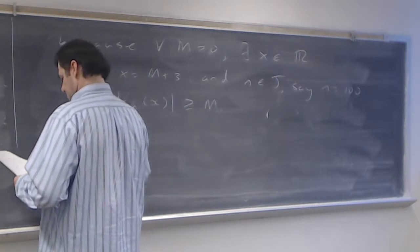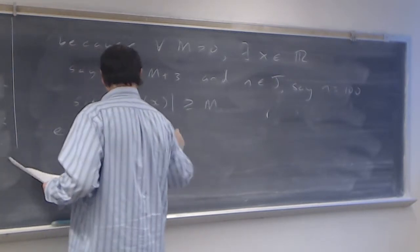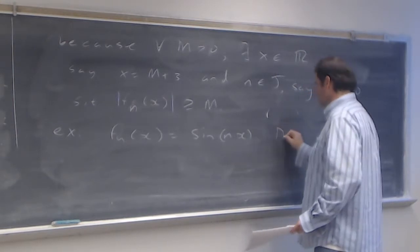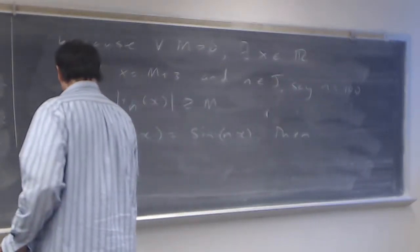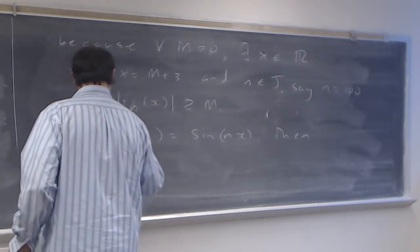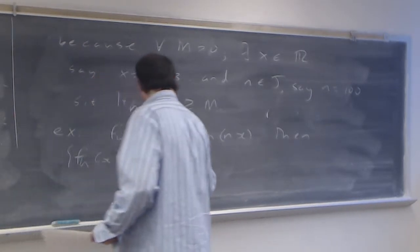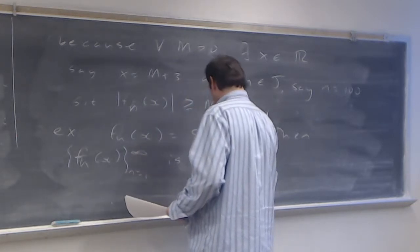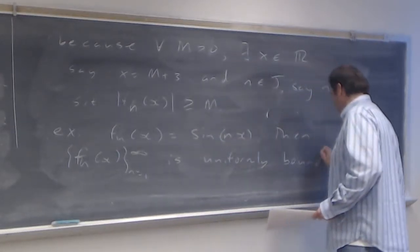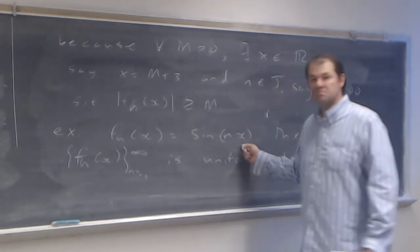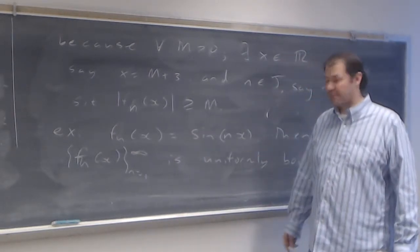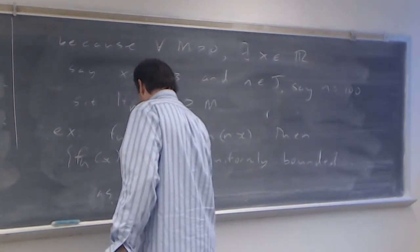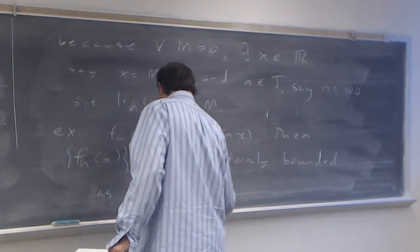Here's another example. If we let f sub n of x equal to sine of n times x, then the sequence of functions f sub n of x is uniformly bounded. That's easy to see, because sine of anything is bounded between 1 and minus 1. So the absolute value of f sub n of x is going to be less than or equal to 1, and so M equals 1.